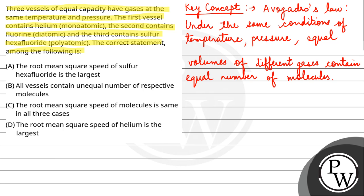Here you have given that all the vessels have equal capacity, so all the volumes are the same, with same temperature and pressure conditions. That means all the vessels contain equal number of respective molecules. So option B is incorrect.